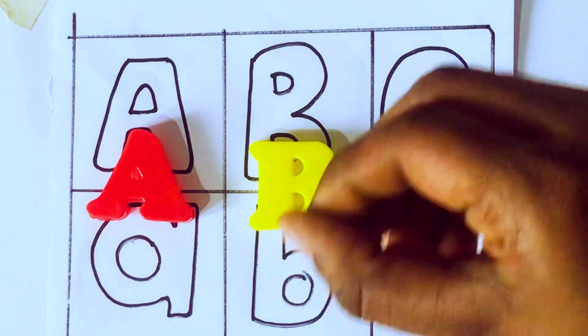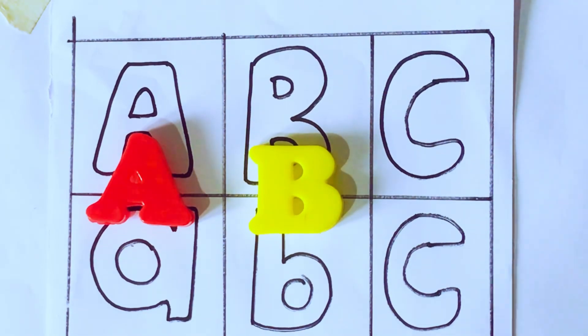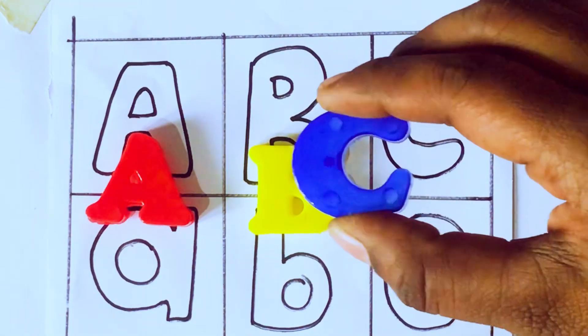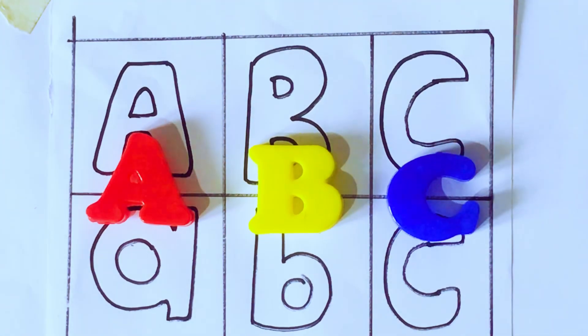B after C. Which letter kids? C. C for cat. C-A-T, cat.